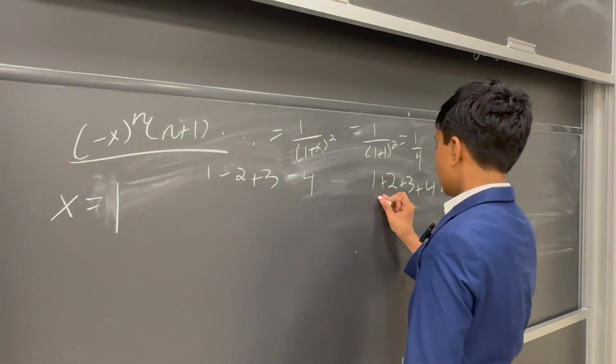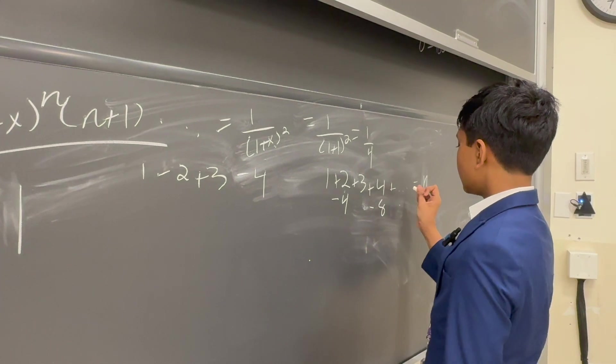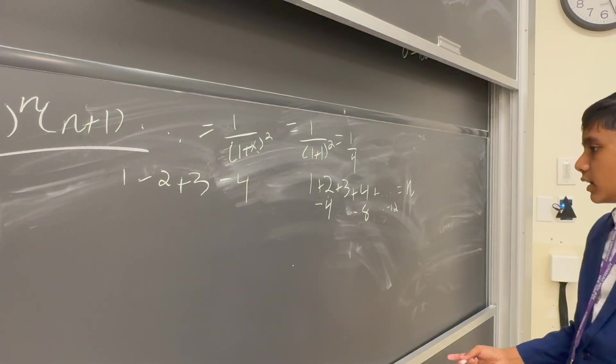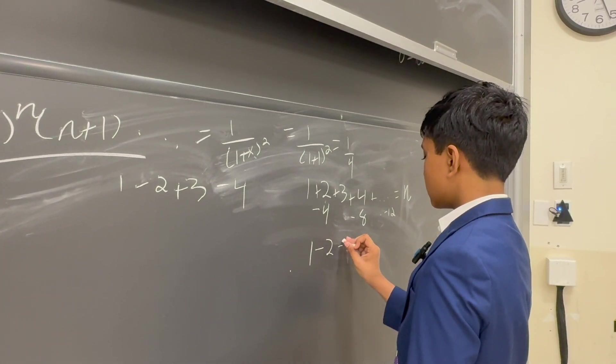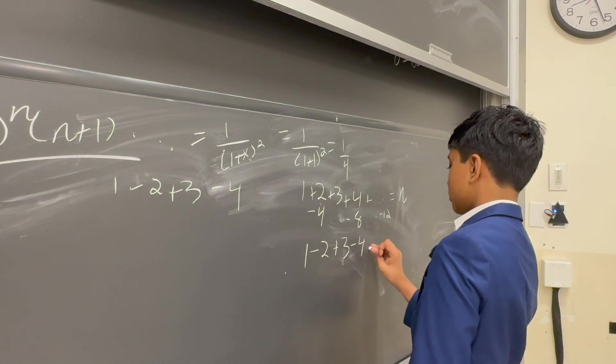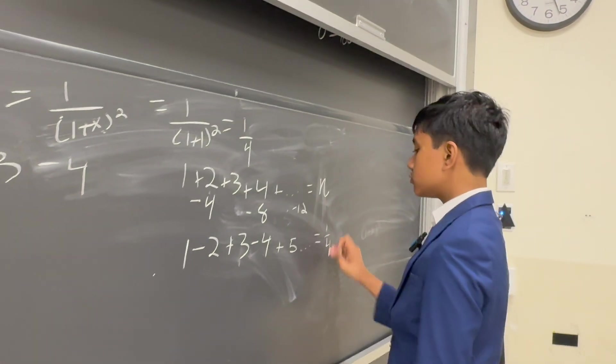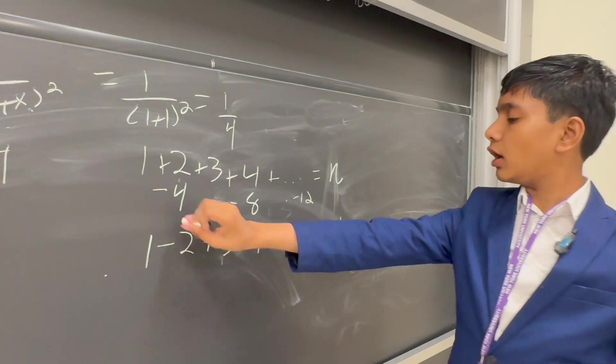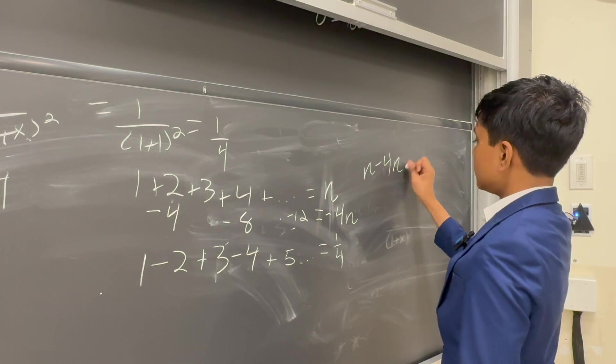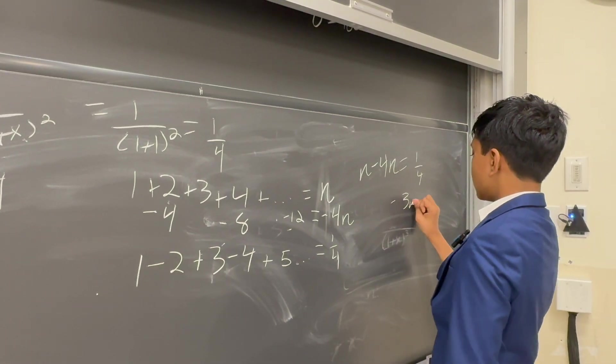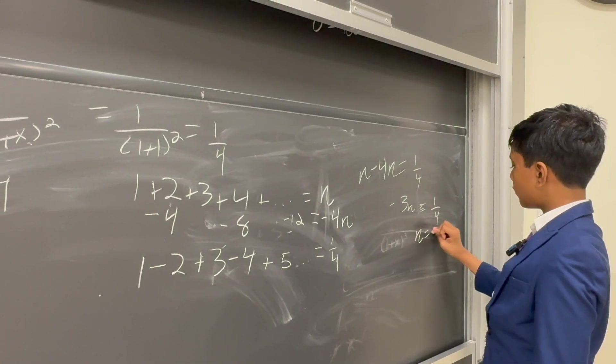Then, one might notice that if we subtract double this, which is 4, then double this, which is 8, then double 6, which is minus 12, so on and so forth, we will get the negative series that we were just talking about. And we know this is 1/4. But what's crucial is that this is pretty obviously just minus 4n. So that means that n minus 4n equals 1/4. So minus 3n equals 1/4. And n equals minus 1/12.